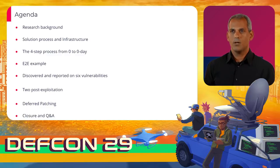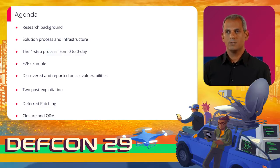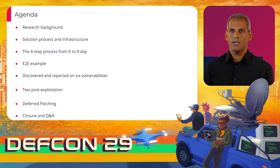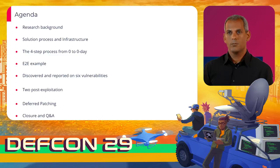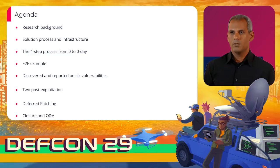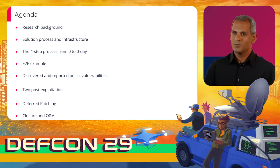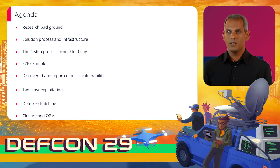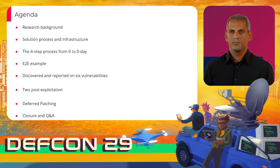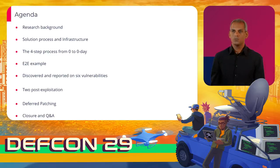We will start with describing the research goals, assumptions, motivations, and approach. Then we will explain the challenge and our chosen solution, process, and infrastructure. We will detail the process step-by-step and provide a detailed end-to-end example from zero to zero day. We will present the six vulnerabilities and post-exploitation techniques we discovered. We will end our talk with a new proposed idea for discovering vulnerable Windows machines and open a Q&A session.